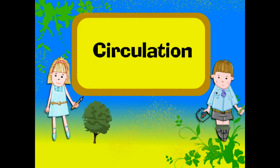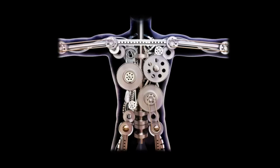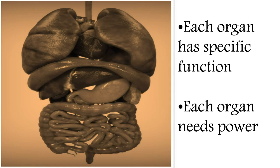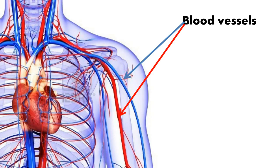You must have heard doctors saying our body is like a machine. In our body, different organs are assigned different tasks. Like any machine, these organs need power — we get that power from food. But how does food reach every organ? It travels through blood, which runs through pipe-like structures called blood vessels.